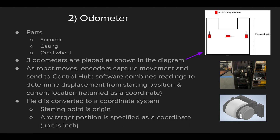Now we move to our second form of navigation, and that is the odometer. The odometer has three parts: the encoder, which we just talked about — which in the previous situation was used in the context of motors, but you can also place it in an odometer for a similar purpose — then you have the casing, and you have the small omni wheel, which is placed in the center of that casing.